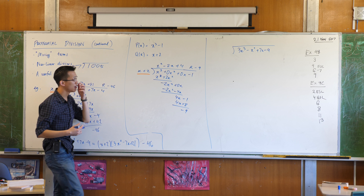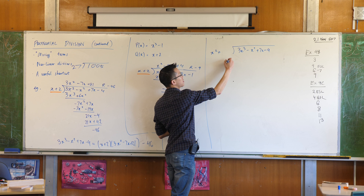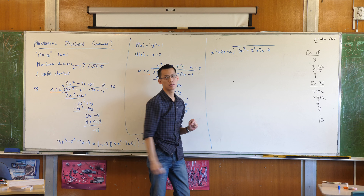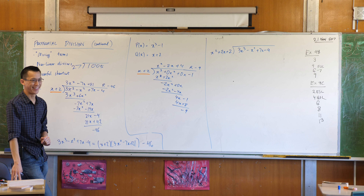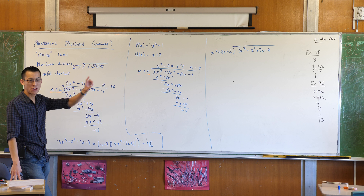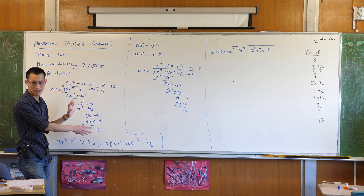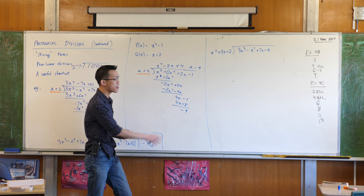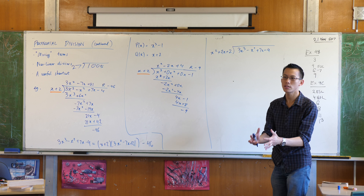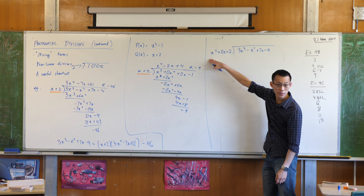So let's go back to the original dividend. If I had 3x³ − x² + 7x − 4, I can divide this by something larger than just a linear factor — I can divide by something quadratic, for example. That has a higher power, just like a larger value has more digits. So let's try and keep it nice and simple and divide by x² + 2x + 2.